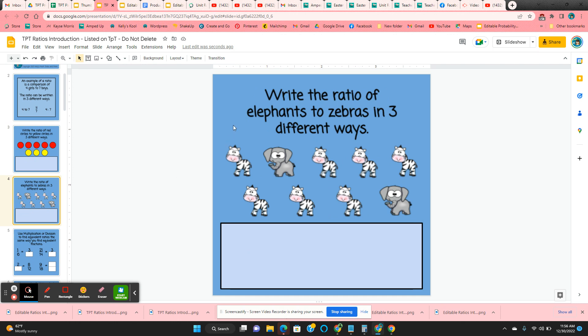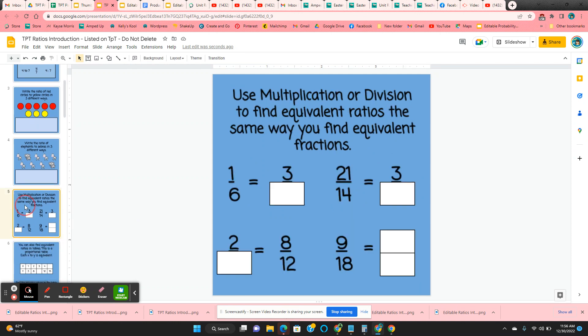Three different ways to write the ratio of elephants to zebras. Again, they're going to type that in the box, and then they're going to use multiplication or division to find equivalent ratios the same way they find equivalent fractions.